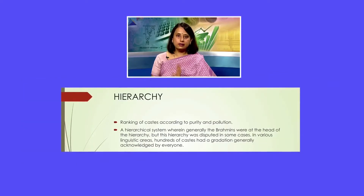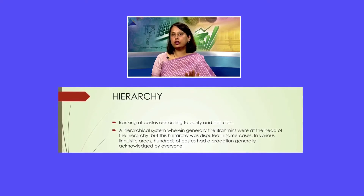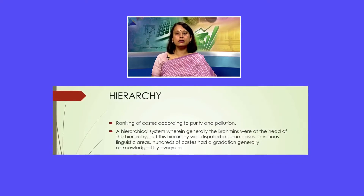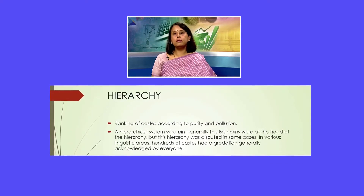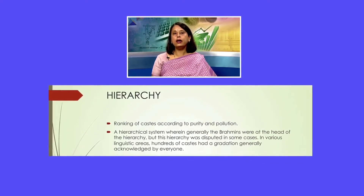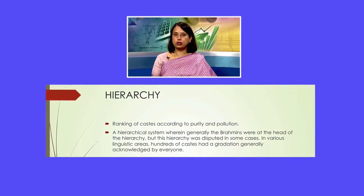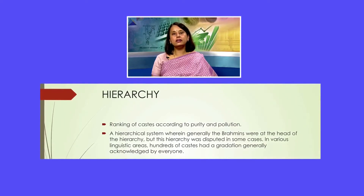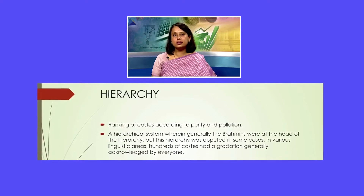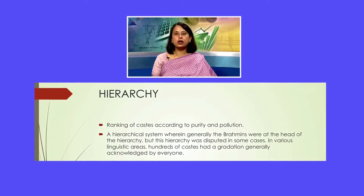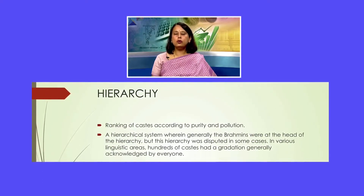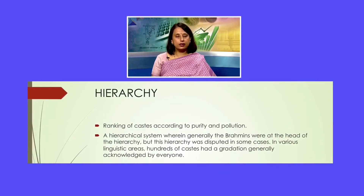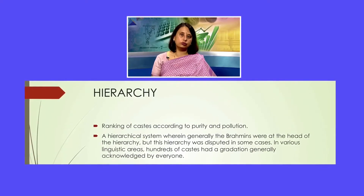Hierarchy. The term hierarchy has to do with the ranking of castes according to the concept of purity and pollution. A hierarchical system is one where the Brahmans occupy the highest position. This hierarchy was disputed in some cases, and in various linguistic areas hundreds of castes had a gradation generally acknowledged by everybody. Below the Brahmans, you had the Kshatriyas, then the Vaishyas, and finally the Shudras.